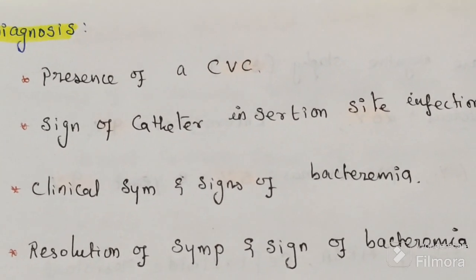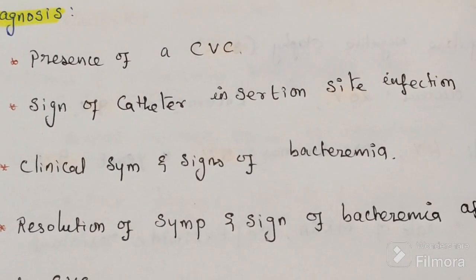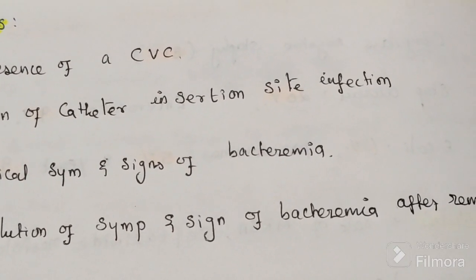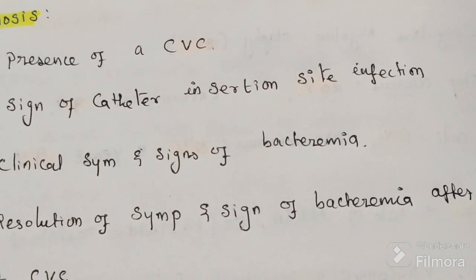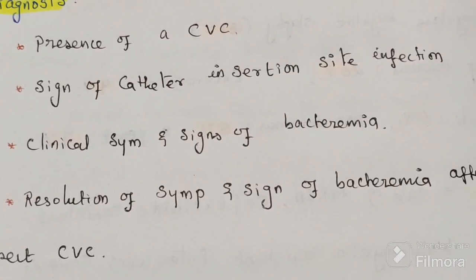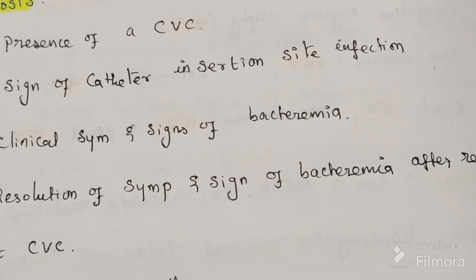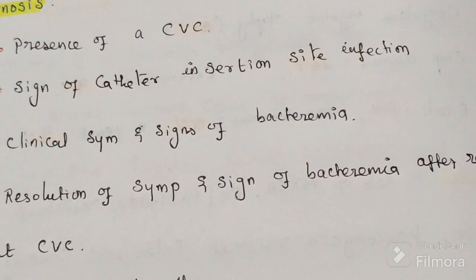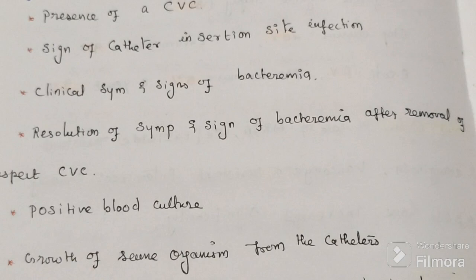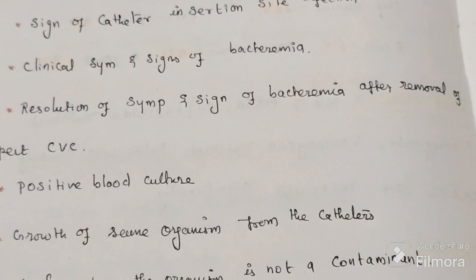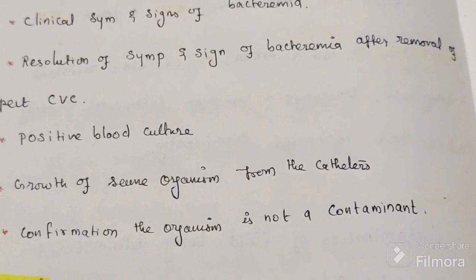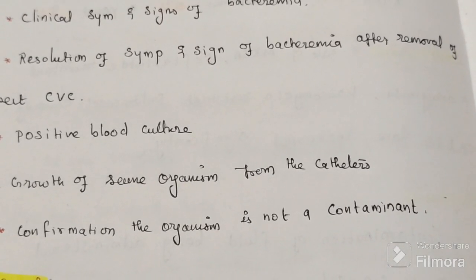For diagnosis, look for the presence of a CVC, signs of catheter insertion site infection, and clinical symptoms and signs of bacteremia. After removal of the suspected CVC, diagnosis requires a positive blood culture, growth of the same organism from that catheter, and confirmation that the organism is not a contaminant.